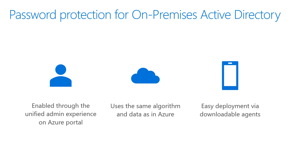You can enable Azure AD password protection for your on-prem environment from the unified admin experience on Azure Portal, as covered in the last video. When you enable this feature, we extend the same Azure service to your on-prem environment — the exact same algorithm, in fact the exact same code that is running in Azure.